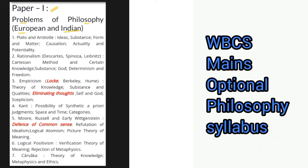Starting with Plato and Aristotle — their ideas, substance, form and matter, causation, actuality and potentiality. Next we have rationalism: Descartes' principle, then Spinoza, Leibniz — the Cartesian method and certain knowledge about substance, about God, about determinism and freedom.